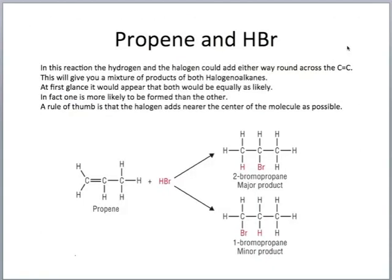Let's look at propene and hydrogen bromide. In this reaction, the hydrogen and the halogen could add either way across the double bond, giving a mixture of products — both would be halogenoalkanes. At first it would appear that both are equally likely; however, one is more likely to be formed than the other. This again comes down to Markovnikov's rule: the hydrogen would prefer to attach to the carbon that already has more hydrogens on it, and the bromine attaches to the carbon with only one hydrogen. Therefore the major product is 2-bromopropane and 1-bromopropane is the minor product.